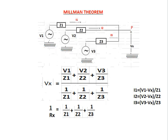Next is Millman's theorem. Here, three voltage sources are each connected to impedances, with the other side of each impedance star-connected at a floating point P. The floating point voltage Vx equals (V1/Z1 + V2/Z2 + V3/Z3) divided by (1/Z1 + 1/Z2 + 1/Z3).